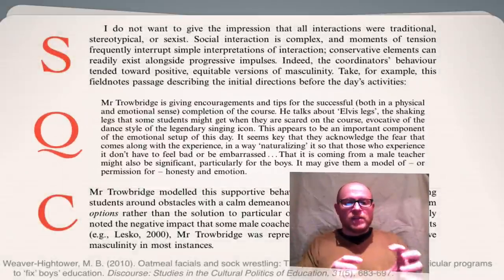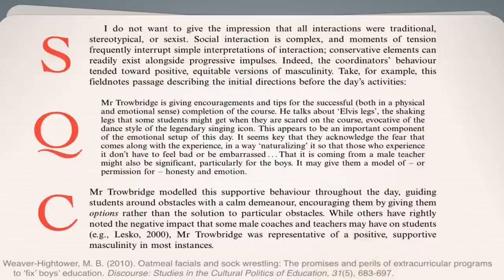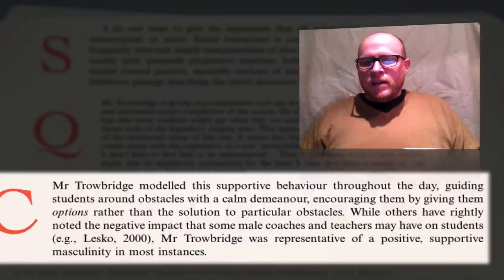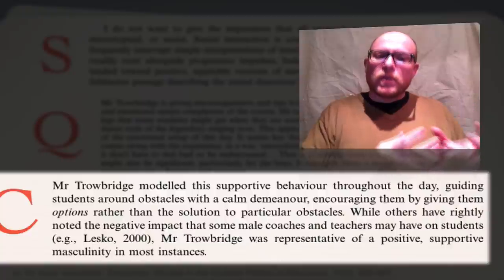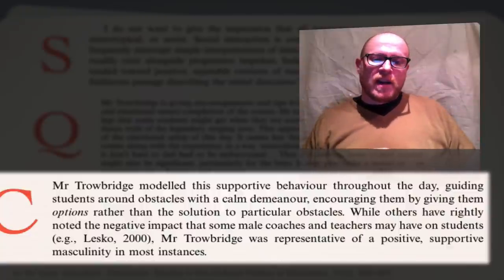That's my field notes passage describing the directions the teachers were giving. I then provide some comment on that particular quotation. Here's how I contextualize it for the rest of the argument: 'Mr. Trowbridge modeled this supportive behavior throughout the day, guiding students around obstacles with a calm demeanor, encouraging them by giving options rather than solutions. While others have rightly noted the negative impact some male coaches and teachers may have on students, Mr. Trowbridge was a representative of a positive, supportive masculinity in most instances.' I'm expanding on and explaining what's important about that quotation, linking it back to the thesis from earlier in the paragraph.